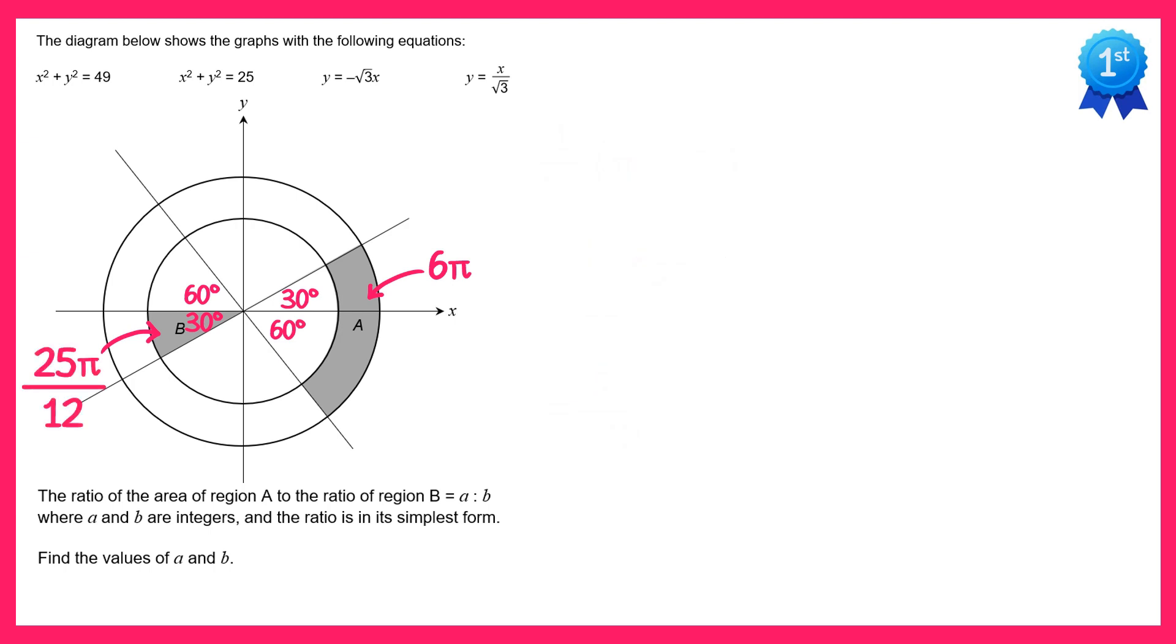The question asks us to look at the ratio of the area of A to the area of B. So the area of A is 6 pi and the area of B is 25 pi over 12. If we multiply both sides by 12, on the left 12 times 6 pi is 72 pi and on the right it's just 25 pi. You can now cancel pi from both sides and you'll get 72 to 25. So the values of A and B are 72 and 25.